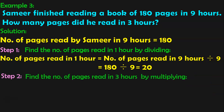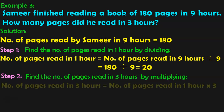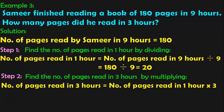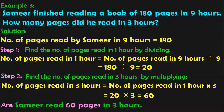Step 2 is to find the number of pages read in 3 hours by multiplying. Number of pages read in 3 hours is equal to number of pages read in 1 hour multiplied by 3, which is 20 into 3. 20 into 3 is 60. So, Samir read 60 pages in 3 hours.